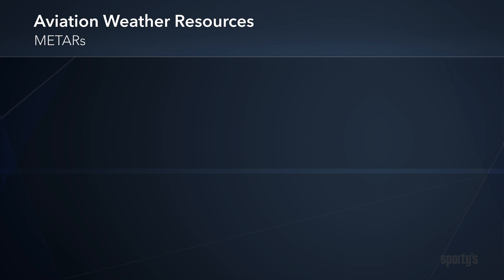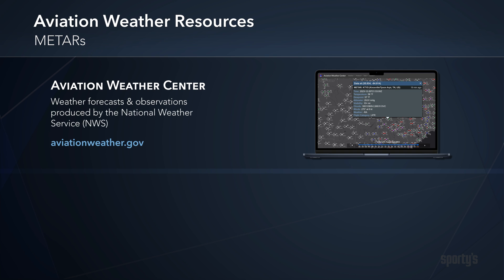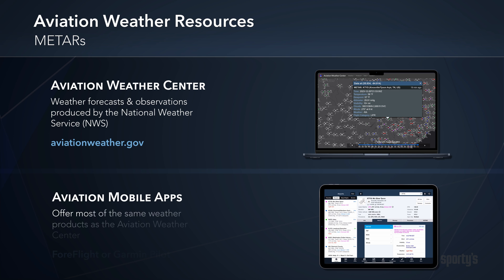Now that we've covered how to read a METAR, let's explore where you can find them. The best place to start is the Aviation Weather Center, a free online resource that includes various aviation weather forecasts and observations, including METARs. You'll also find that METARs are readily accessible in aviation apps, like ForeFlight.